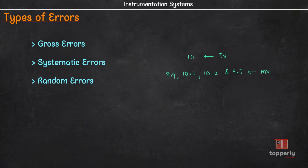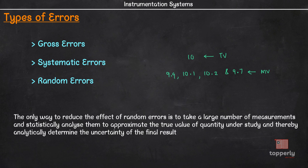So in a nutshell we can say, since random errors are unknown, the only way to reduce their effect is by taking a large number of measurements and using statistical analysis to approximate the true value of the quantity under study and thereby analytically determine the uncertainty of the final result. Also, to make the statistical methods and interpretations meaningful, the measurements should be done using as many different procedures, techniques and experimenters as practicable.